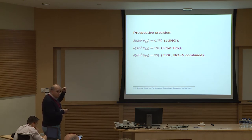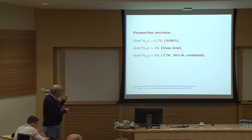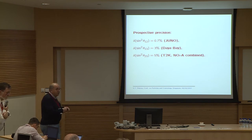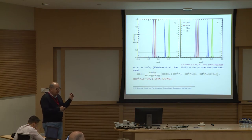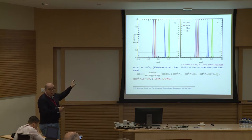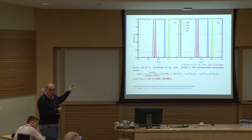Using the prospective precision expected from JUNO for sin²θ₁₂, from Daya Bay for sin²θ₁₃, and from T2K and NOvA combined for sin²θ₂₃, one can compute predicted peaks for cos δ for normal and inverted ordering, assuming current best-fit values. Bimaximal mixing disappears from this plot because it is strongly disfavored by this analysis.